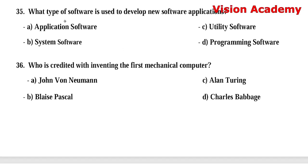Question 35: What type of software is used to develop new software applications? Option A: application software. Option B: system software. Option C: utility software. Option D: programming software. The right answer is Option D, programming software.